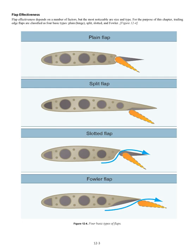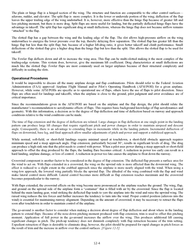Flap Effectiveness. Flap effectiveness depends on a number of factors, but the most noticeable are size and type. Trailing edge flaps are classified as four basic types: plain/hinge, split, slotted, and fowler. The plain or hinge flap is a hinged section of the wing, comparable in structure and function to other control surfaces such as ailerons, rudder, and elevator. The split flap is the lower or underside portion of the wing; deflection leaves the upper trailing edge undisturbed. It is more effective than the hinge flap because of greater lift and less pitching moment, but there is more drag. Split flaps are more useful for landing, but partially deflected hinge flaps have the advantage on takeoff.